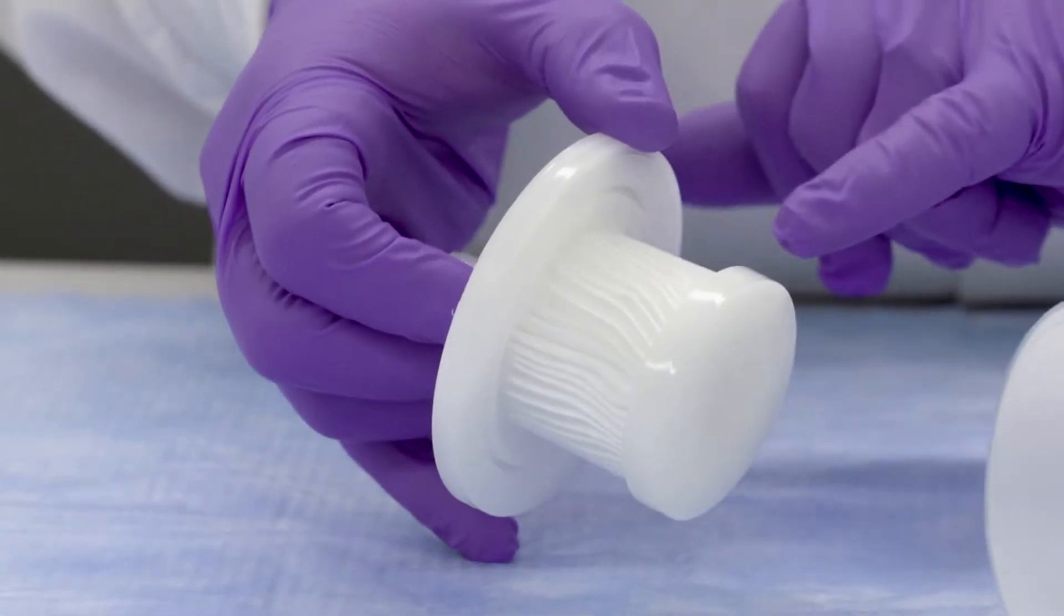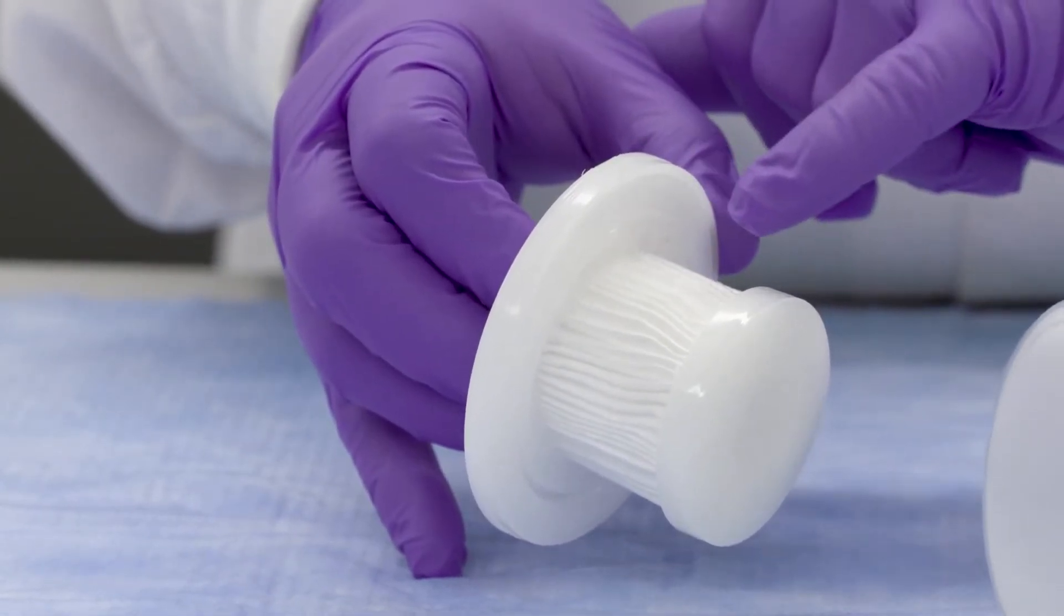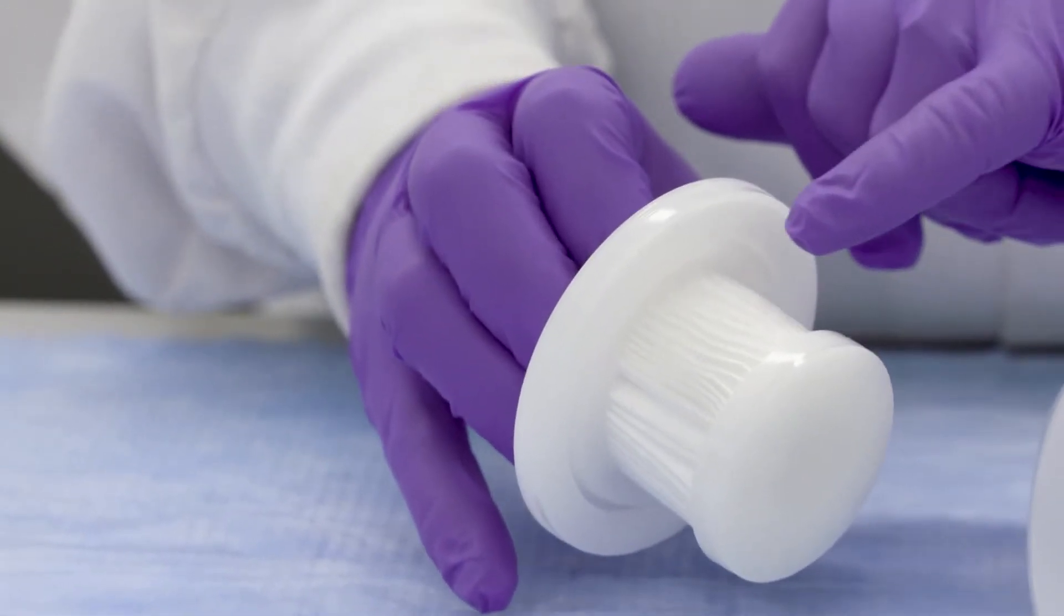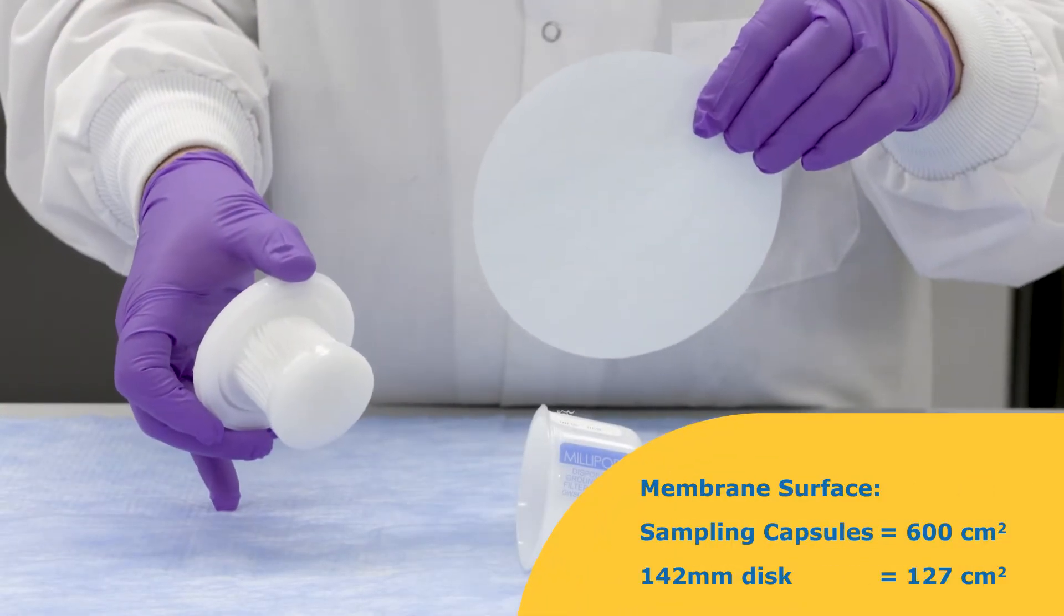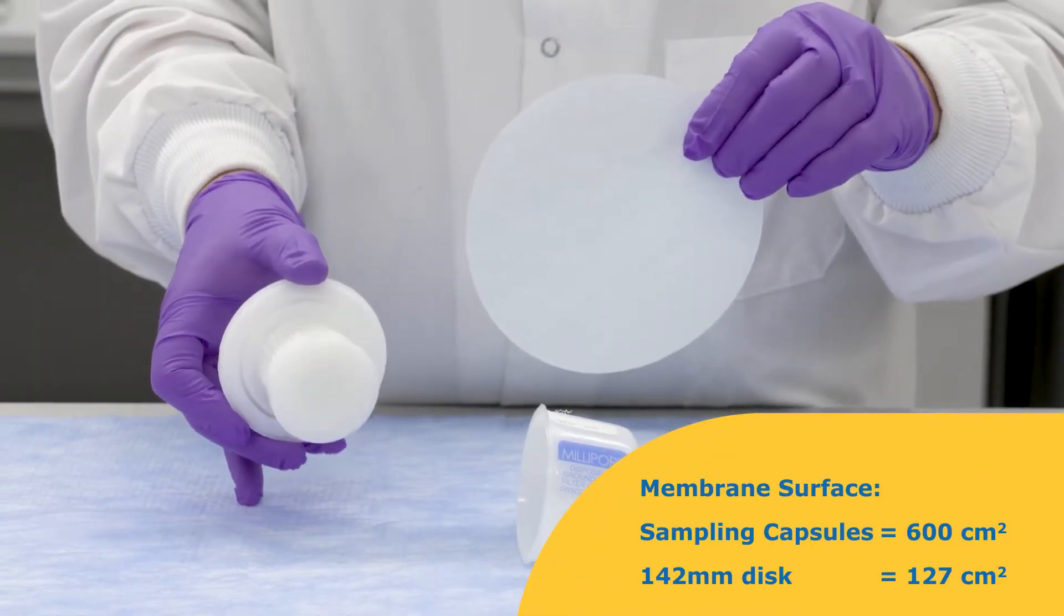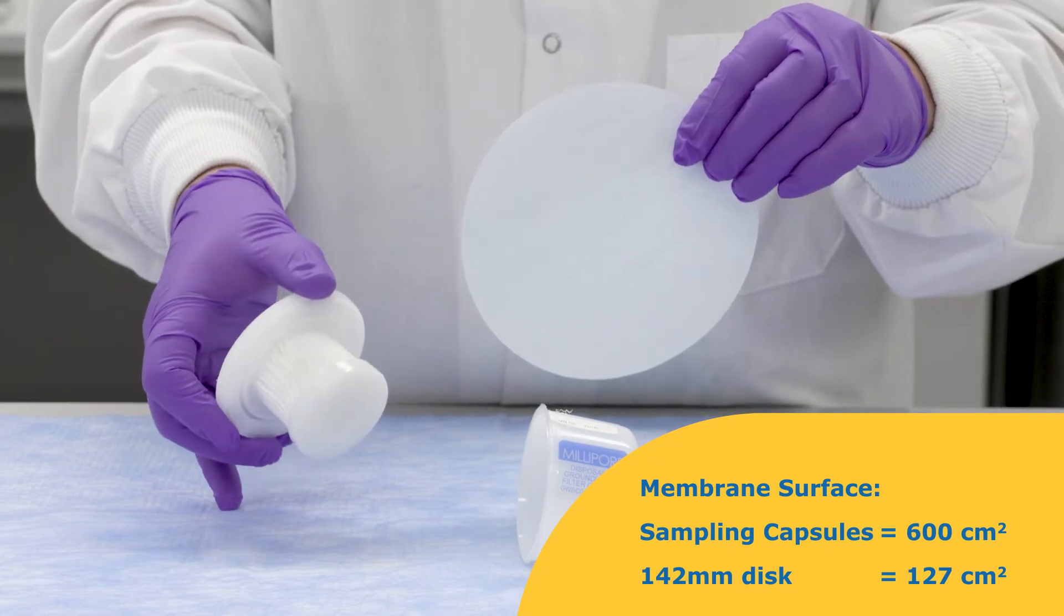Pleating allows greater membrane surface area to be fit into the housing. Here the sampling capsule allows 600 square centimeters of available surface area, about 4.7 times more than the recommended minimum filtration area compared to a 142 millimeter disc which contains 127 square centimeters.